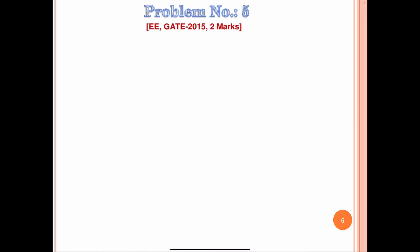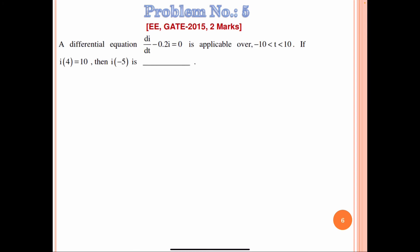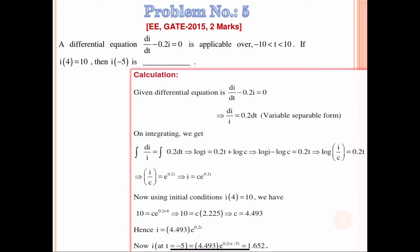Now one more question. This was asked in Electrical Engineering GATE 2015. The statement is: the differential equation di/dt − 0.2i = 0 is applicable over −10 < t < 10. If i(4) = 10, find i(−5). Reducing to variable separable form: di/i = 0.2 dt.